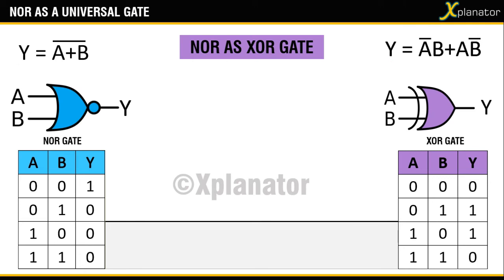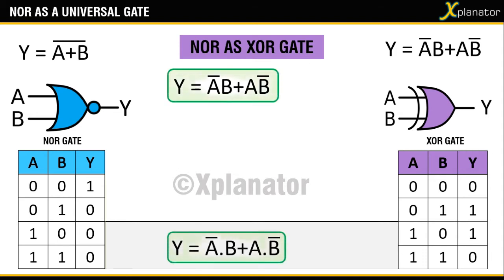To begin with the derivation, write y equals a bar b plus a b bar. Please note that this is the same as y equals a bar dot b plus a dot b bar. Whether or not you write the dot operator it means the same. To simplify the expression such that it fits in the NOR form,